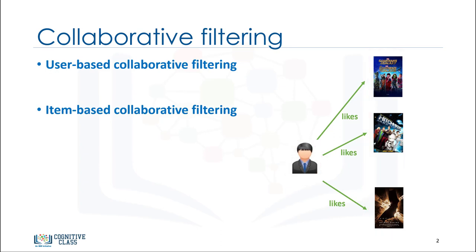Many recommendation systems use collaborative filtering to find these relationships and to give an accurate recommendation of a product that the user might like or be interested in. Collaborative filtering has basically two approaches: user-based and item-based.